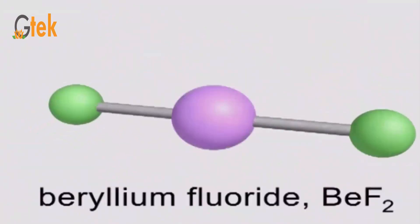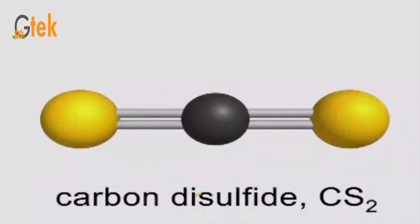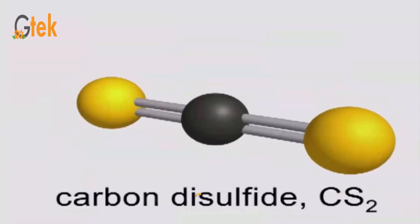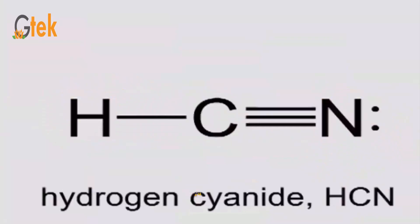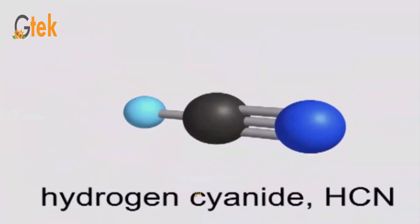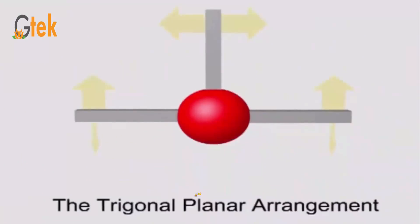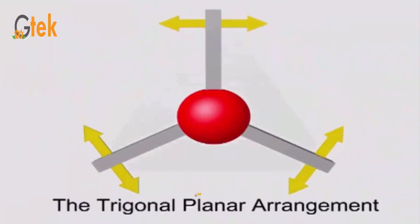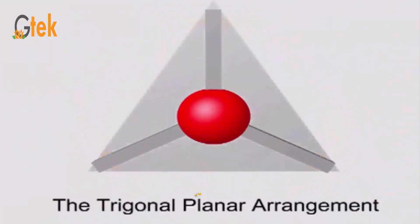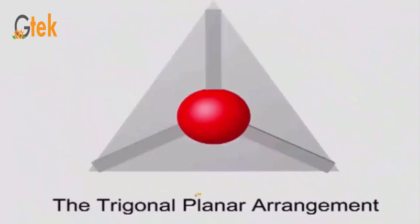You can see the center element will bond with the side elements at a bond angle of 180 degrees — it's linear. The typical example is beryllium fluoride. This one is carbon disulfide, CS2, with a double bond, and hydrogen cyanide with a nitrogen triple bond.